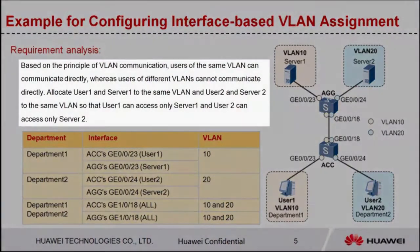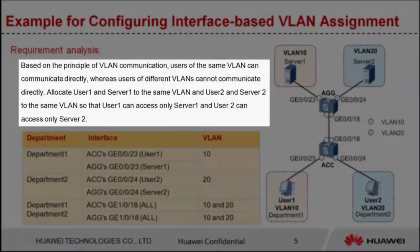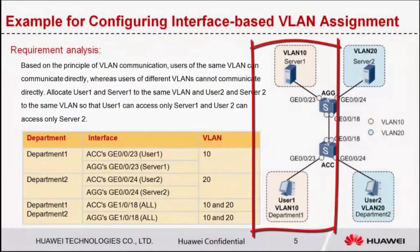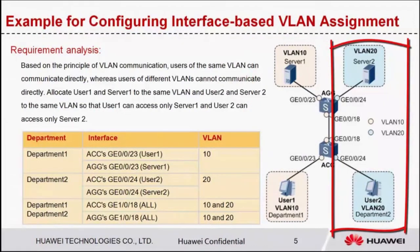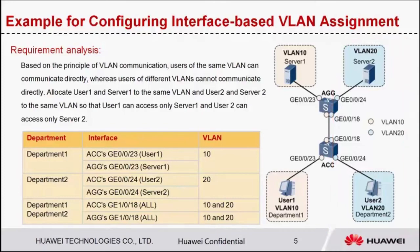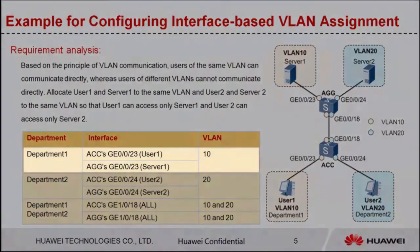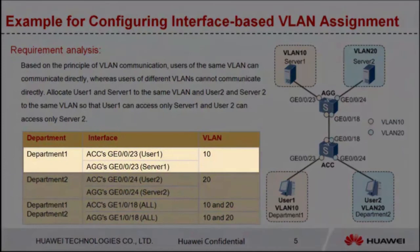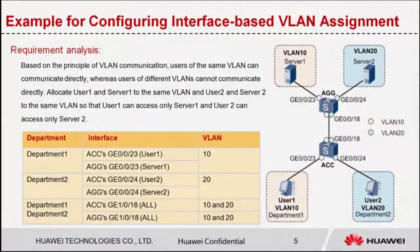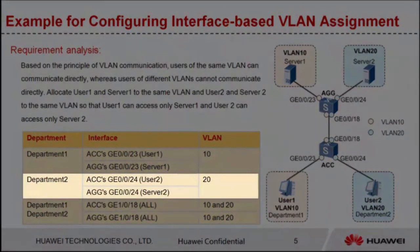Based on the principle of VLAN communication, users of the same VLAN can communicate directly, whereas users of different VLANs cannot communicate directly. We allocate user 1 and server 1 to the same VLAN, and user 2 and server 2 to the same VLAN, so that user 1 can access only server 1 and user 2 can access only server 2. The simplest approach is to specify the interfaces connecting user 1 and server 1 to VLAN 10, and the interfaces connecting user 2 and server 2 to VLAN 20.